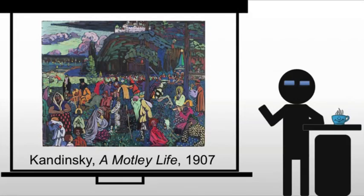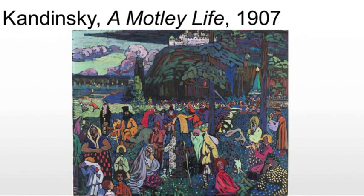We're actually starting with something that doesn't look like a Kandinsky, if you're familiar with him at all. This is A Motley Life, and this is actually a very early work by the artist. This is his attempt at an ethnographic study — he's showing religion mixed with paganism in northern Russia, being sent out to study these people effectively as an anthropologist, doing these paintings to study the people and remember the experience.